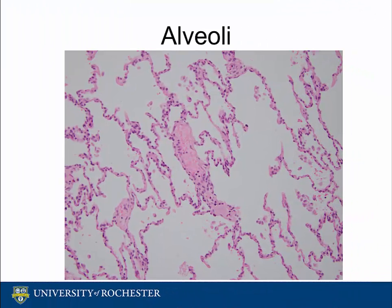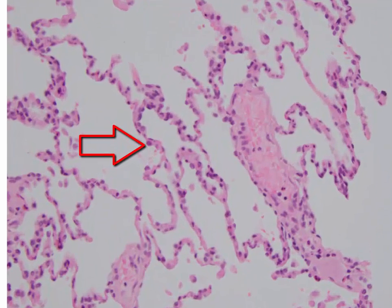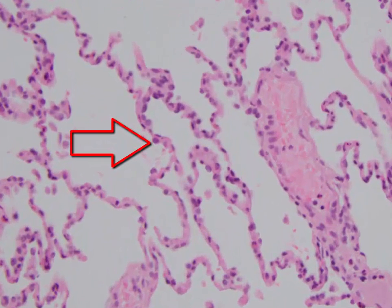The current slide is an image of the alveolar spaces that make up most of the lung. The alveoli are lined by type 1 and type 2 pneumocytes. The type 1 pneumocytes are squamous or flat and constitute about 95% of the pneumocytes.